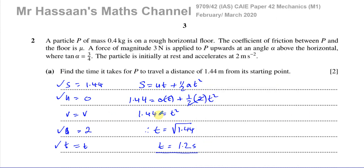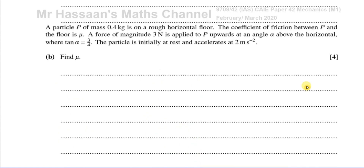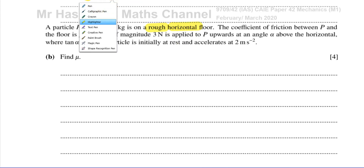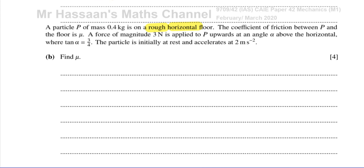We didn't actually have to draw the diagram for part A because we had enough information, and it was only worth two marks — that was my suspicion. Now we need to draw the diagram for part B. I'm going to copy the text down close to where I need to draw so I don't waste time scrolling up and down. We have a particle P of mass 0.4 kilograms on a rough horizontal floor. When it says rough, in your mind you should understand there's going to be something involving friction. So let's draw the floor — it's rough.